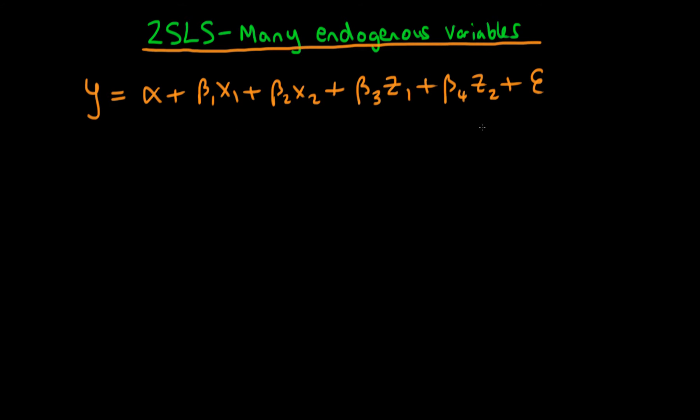So what you might think that we can do in this situation is that we can just use, as we always do, z1 as an instrument for z1, z2 as an instrument for z2, and then if we were to find some further instrument, so z3, we could then use it for both x1 and for x2. But it turns out that this isn't actually adequate.